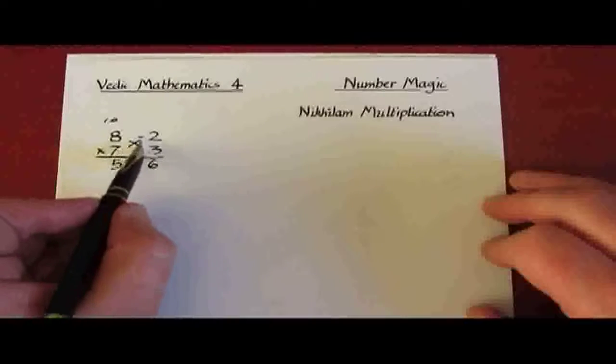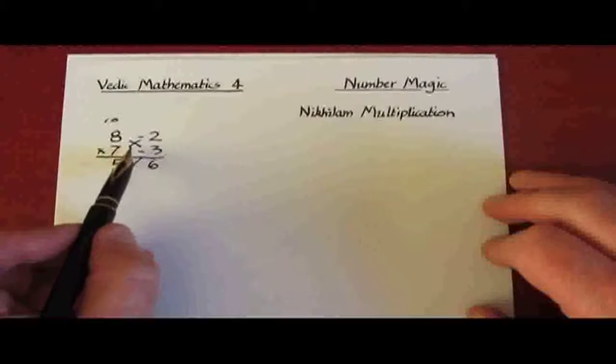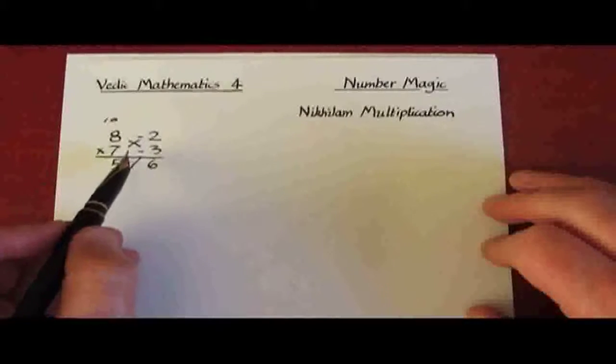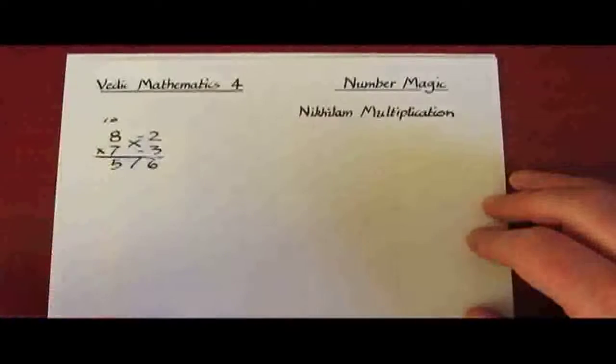And the cross subtraction method here is actually the origin of the multiplication symbol, because this method is not new. It was known hundreds of years ago. Now of course most people know that 8 times 7 is 56.